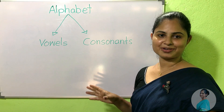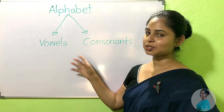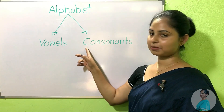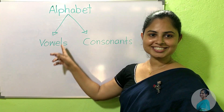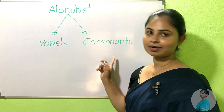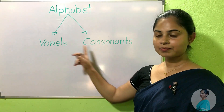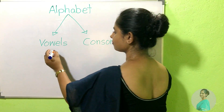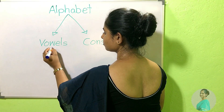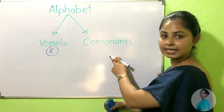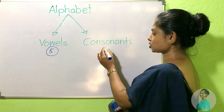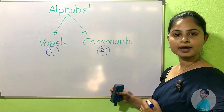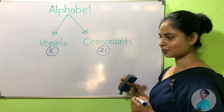So as you all know, there are two kinds: vowels and consonants. There are five vowels and twenty-one consonants.